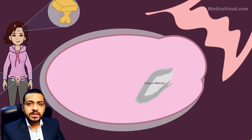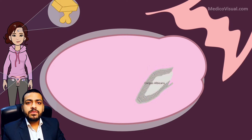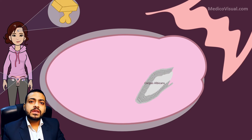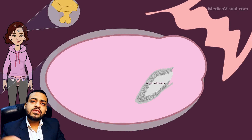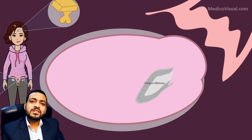Corpus albicans may remain in the ovary for about two to three months and then may be replaced by normal tissue. As for the corpus luteum graviditatus, it also remains for about two to three months and is later destroyed. Then the placenta develops and starts secreting progesterone to maintain the pregnancy.